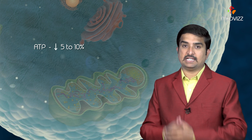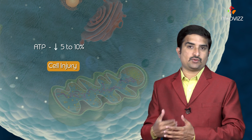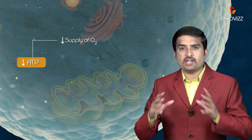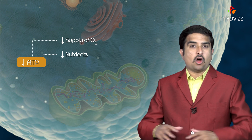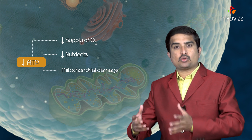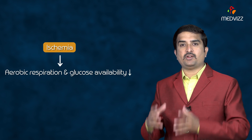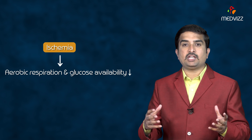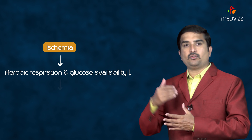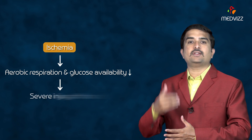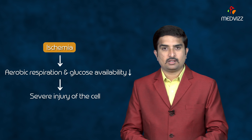ATP depletion to 5–10% of normal levels will induce cell injury. Depletion of ATP is caused mainly due to decreased supply of oxygen and nutrients, or mitochondrial damage and chemical toxins. In ischemia, aerobic respiration and glucose availability are further compromised, leading to faster and more severe injury of the cell.